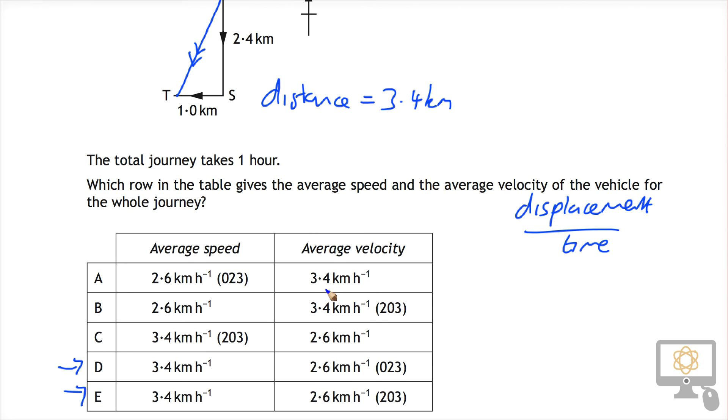We know it's got to be 2.6. It can't be 3.4 because that's our speed. So it has to be 2.6 anyway. We could calculate it using Pythagoras but we don't need to here.